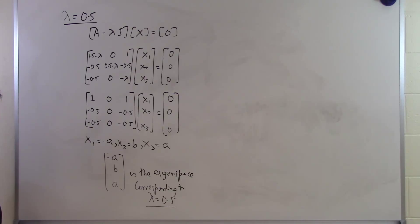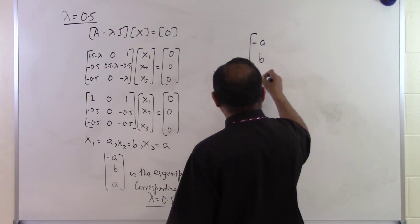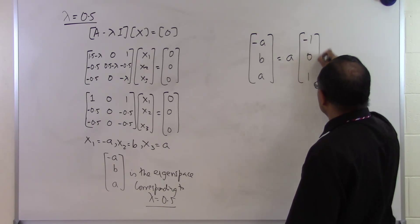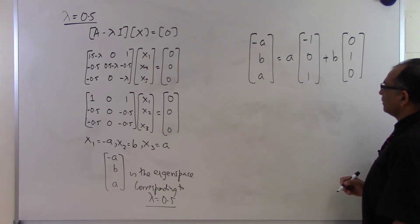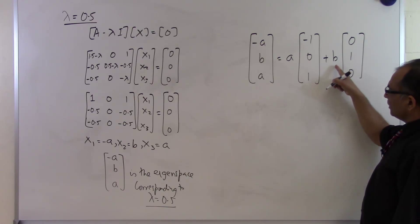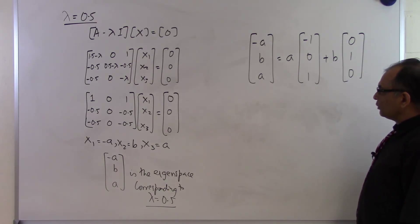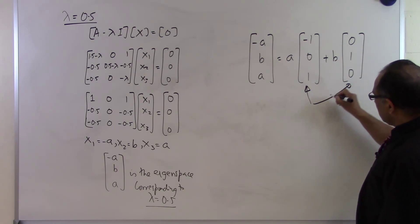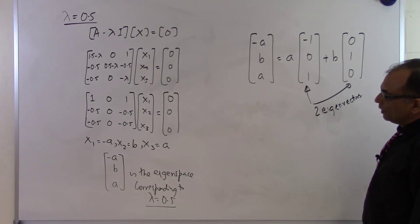To find the eigenvectors corresponding to lambda equal to 0.5, I write minus a, b, a as a linear combination: a times the vector (minus 1, 0, 1) plus b times the vector (0, 1, 0). These two vectors — (minus 1, 0, 1) and (0, 1, 0) — are the two eigenvectors corresponding to lambda equal to 0.5.